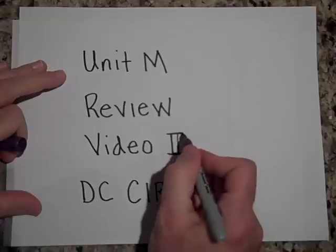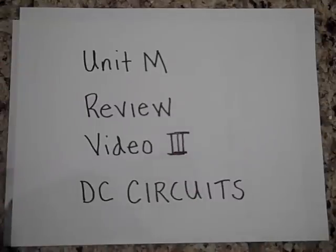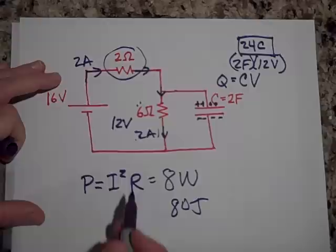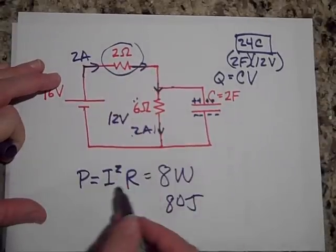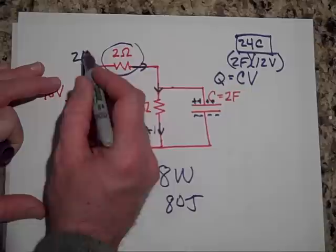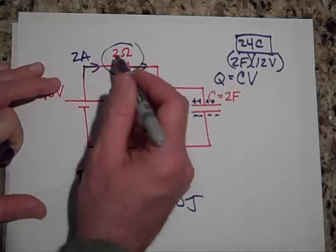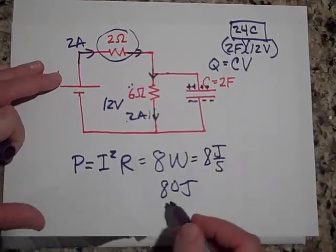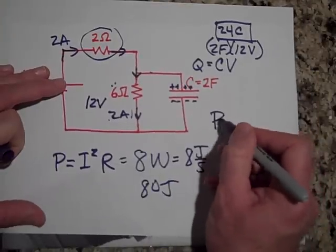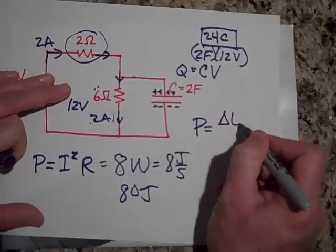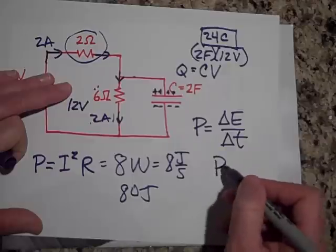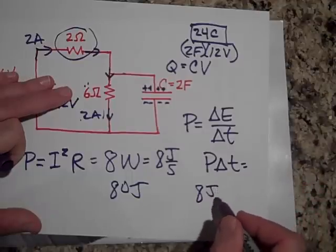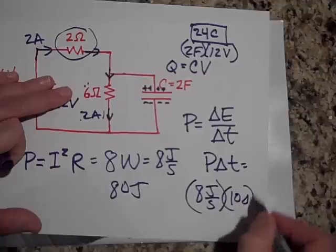All right, we're back with video three of Unit M Review, DC Circuits. Let me just, I finished that fast, but in 10 seconds, well, this has a power of 8 watts because I squared times R. 4 squared is 4, 2 squared is 4 times 2 ohms is 8 watts. And that's 8 joules per second. So in 10 seconds, if I multiply the power, since power is the energy per time, then if I multiply power times time, that gives me the energy. And so that would be 8 joules per second times 10 seconds. That's 80 joules.